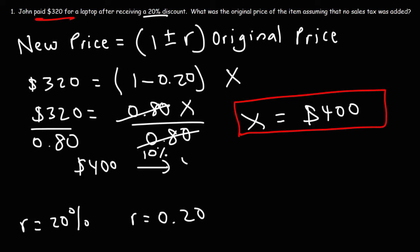10% of 400 is $40. You just need to move the decimal one unit to the left. So 20% of 400 is twice the value of 10%, which is 40. Twice the value of 40 is 80. So that's 20% of 400.